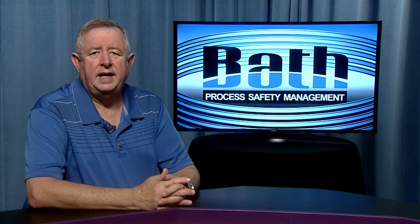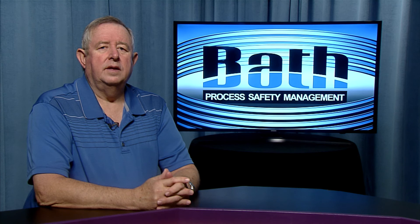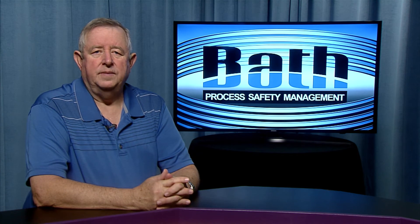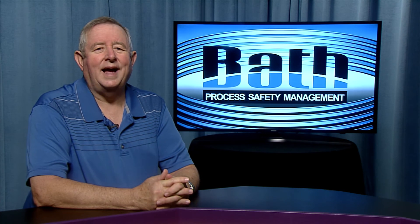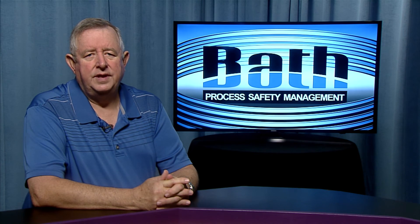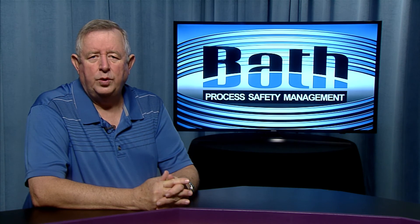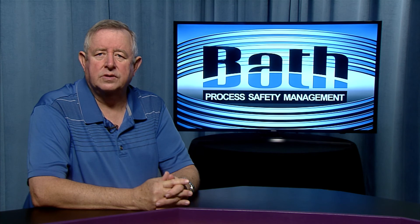The purpose of API-RP500, as stated in Section 1.1.1 under the heading Purpose, and I quote: is to provide guidelines for classifying locations Class 1, Division 1 and Class 1, Division 2 at petroleum facilities for the selection and installation of electrical equipment. The overall goal for both of these documents is for the end user to assign a proper classification to the location under consideration, allowing the proper installation of electrical and electronic equipment and wiring methods which meets the requirements of the National Electrical Code.